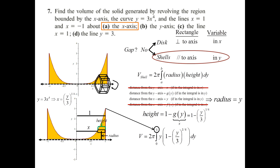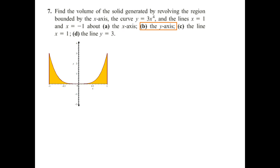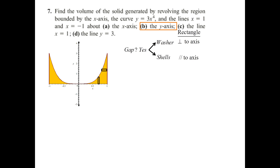Now let's look at the second part of this question: rotating around the y-axis. I'm going to take this region and rotate around the y-axis. Yes, there is a gap between the region and the axis in general. So when there is a gap, we have to decide between washer or shells. For washer, the rectangle has to be perpendicular to the axis. For shells, the typical rectangle has to be parallel to the axis. So washer is going to be in y and shell is going to be in x.